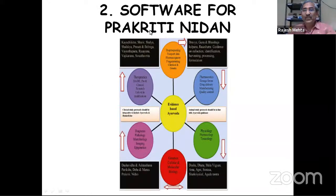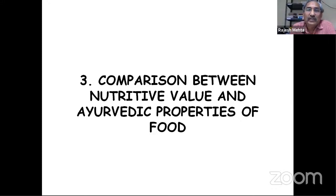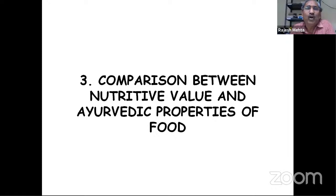We have prepared a set of 60 questions — if you answer them, you will find out your Prakriti. This is an area where I have not come across any software that compares nutritive value of food with Ayurvedic properties of food. With collaboration, we have the database ready — if you take wheat, what are its Ayurvedic properties and what is its nutritive value. Something like: if the food has more proteins it may create Vata, if more carbohydrates it may create Kapha, if more oily it may create Pitta — we should try to correlate this.